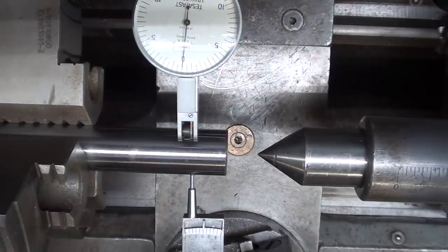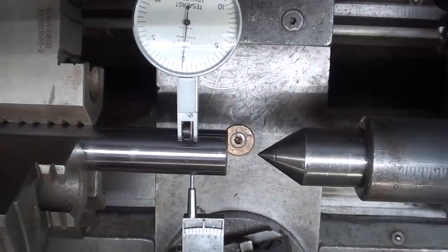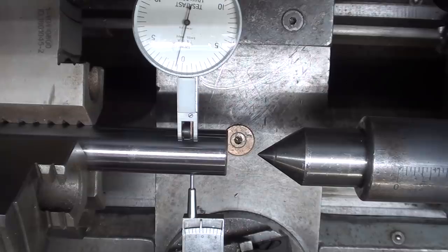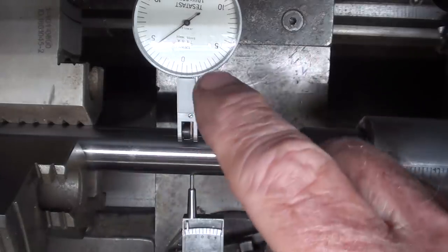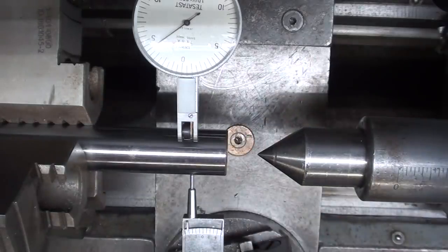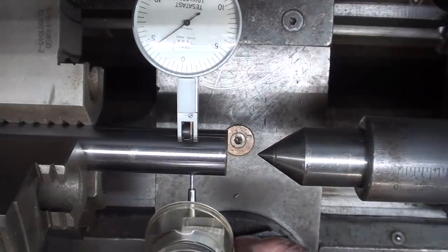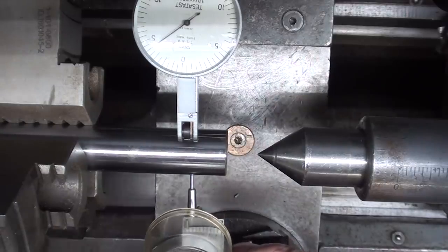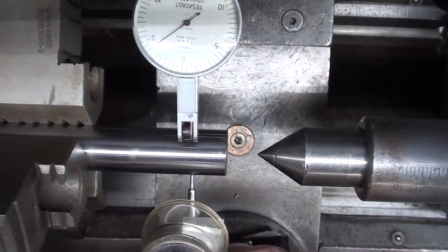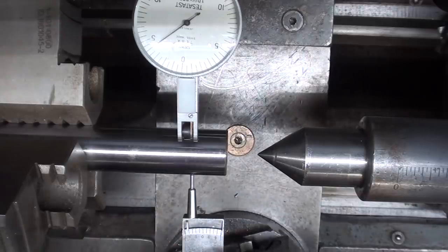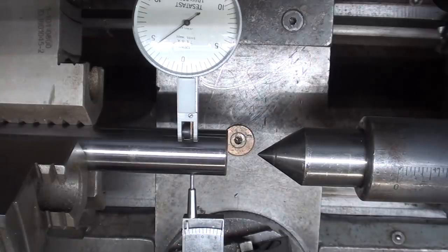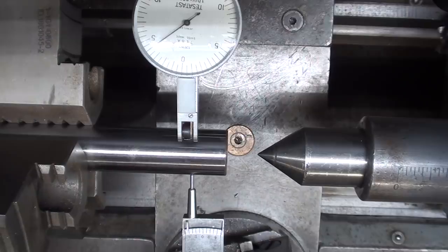Now I am going to move the cross feed. Now watch the TESA and I'm going to move it four thousandths. Okay, that appears to be exactly on four thousandths. And I have to get my magnifier. I believe right at four. So that one is right on.